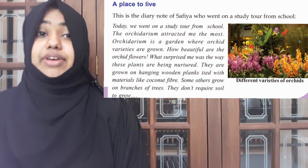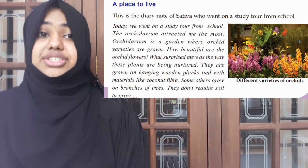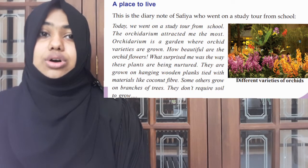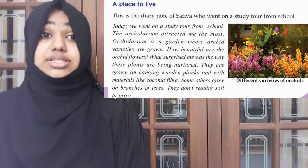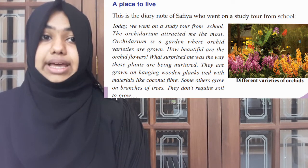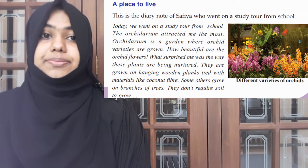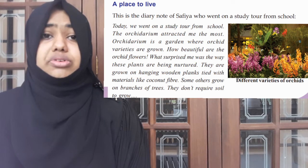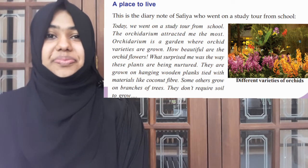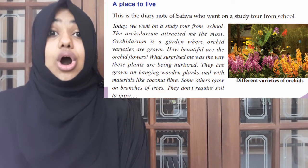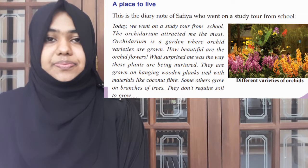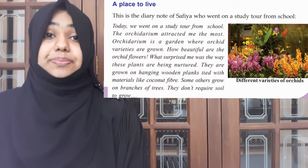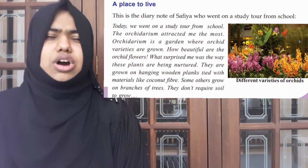Today we went on a study tour from school. The orchardarium attracted me the most. An orchardarium is a garden where orchid varieties are grown. How beautiful are the orchid flowers! What surprised me was the way the plants are being nurtured — they are grown on hanging wooden planks tied with materials like coconut fiber. Some others grow on branches of trees. They don't require soil to grow. So where did Sefya go? She went to an orchardarium.